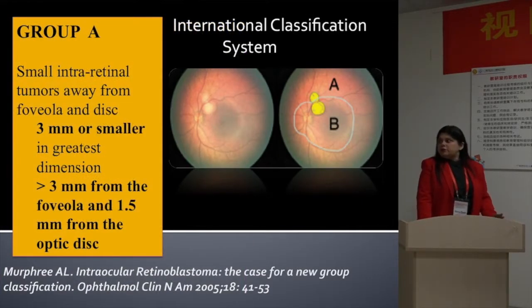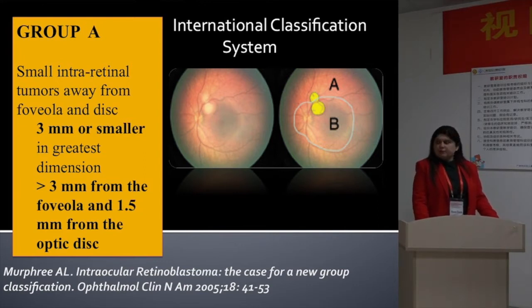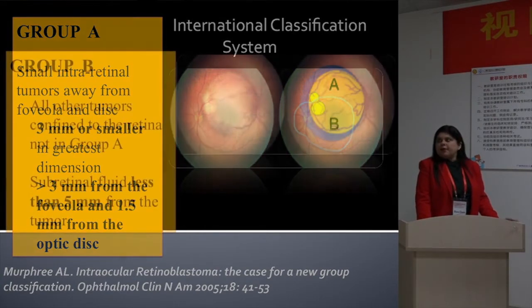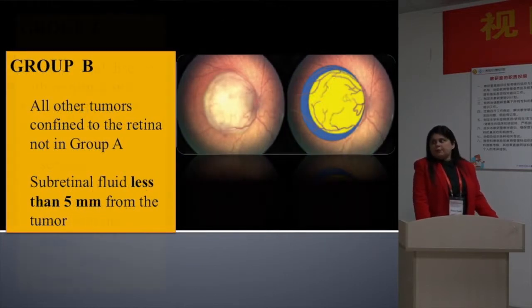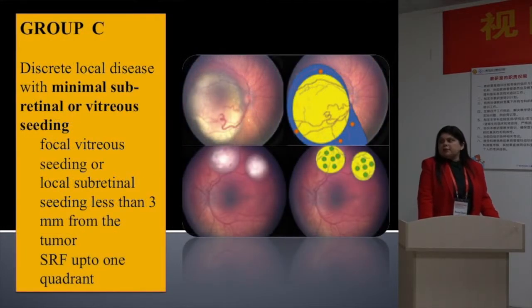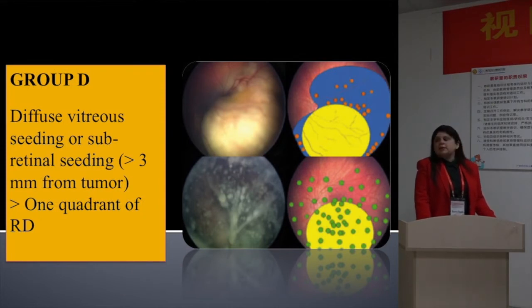We use the international classification system proposed by Murphree et al. Before knowing which cases are candidates for systemic chemotherapy, we need a thorough understanding of this classification. Group A cases are the smallest tumors that don't require systemic chemotherapy. Group B tumors are all other tumors confined to the retina, not in Group A. When there is minimal subretinal or vitreous seeding, it's Group C. When there is diffuse vitreous or subretinal seeding, it's Group D. Groups B, C, and D are candidates for systemic chemotherapy.